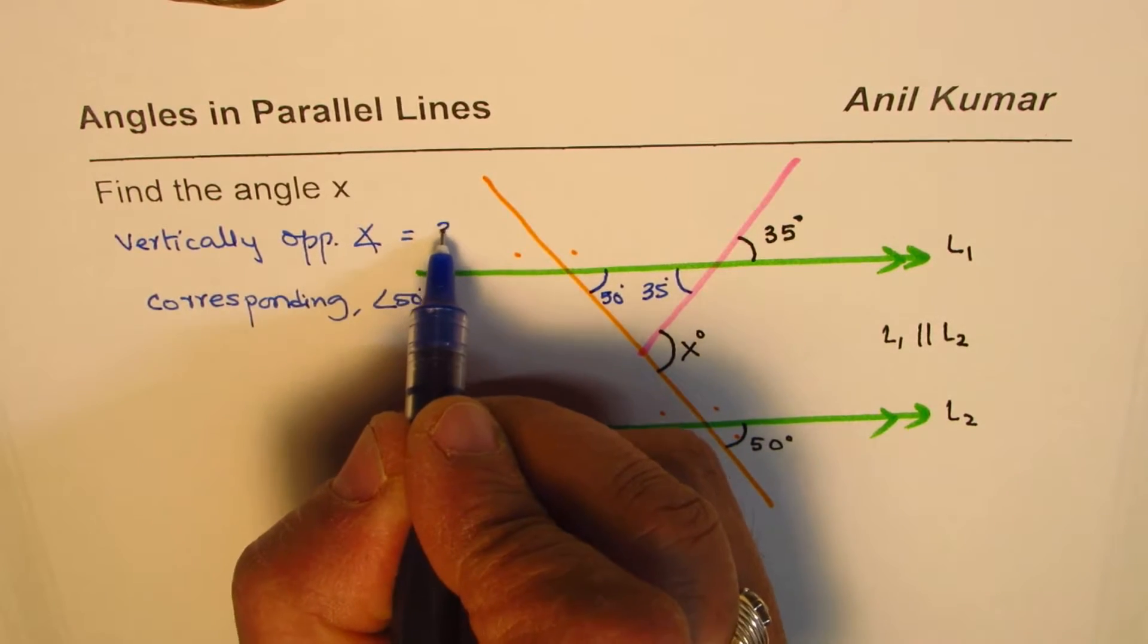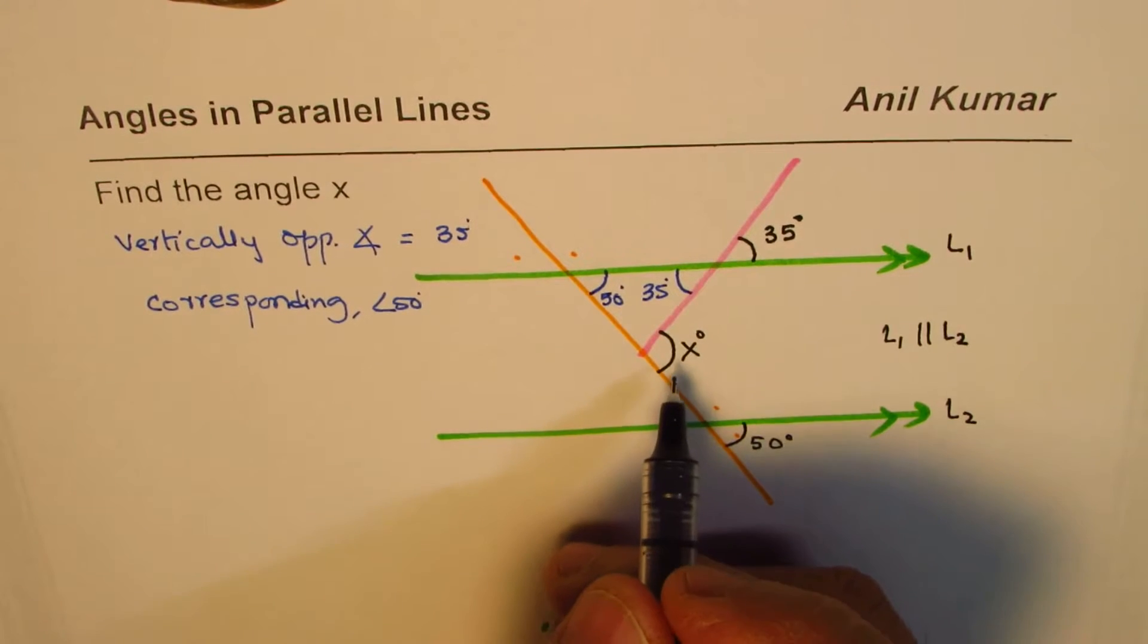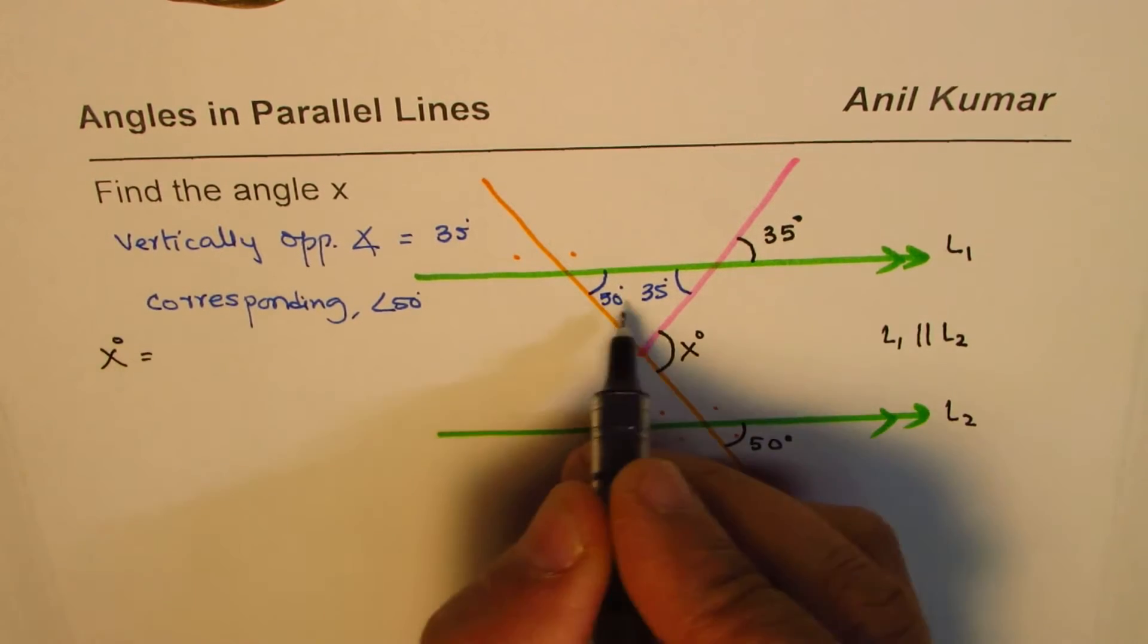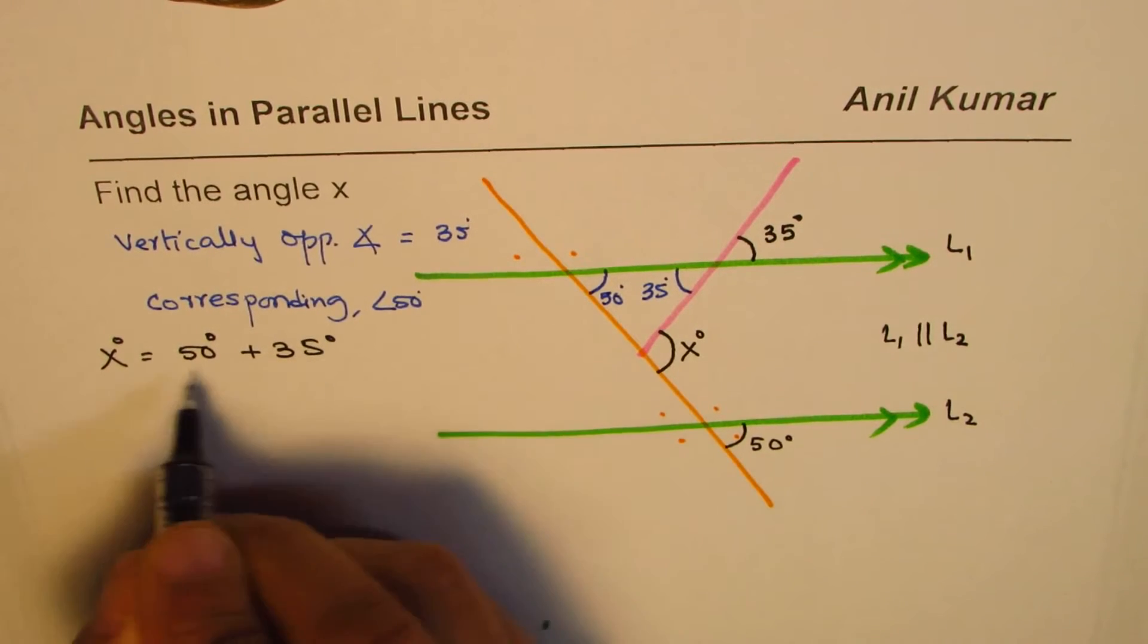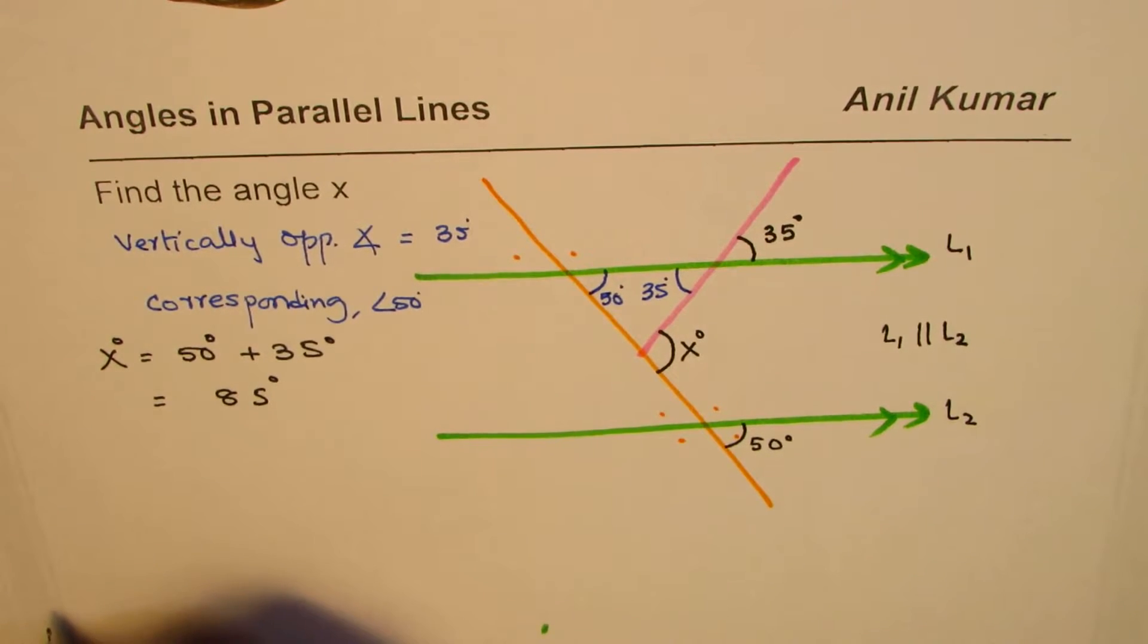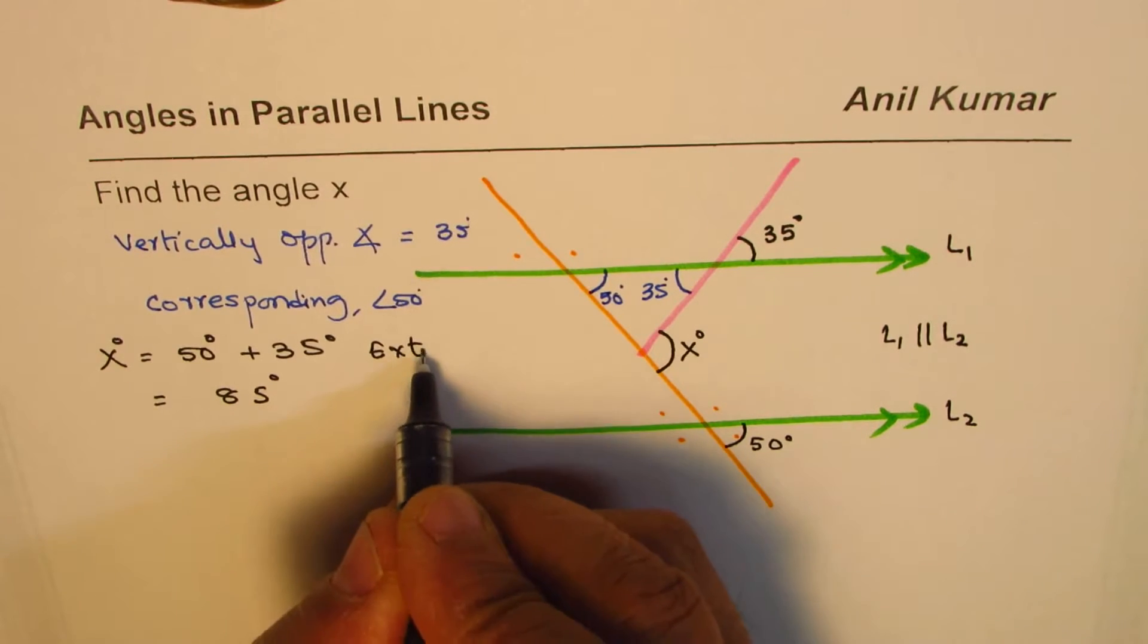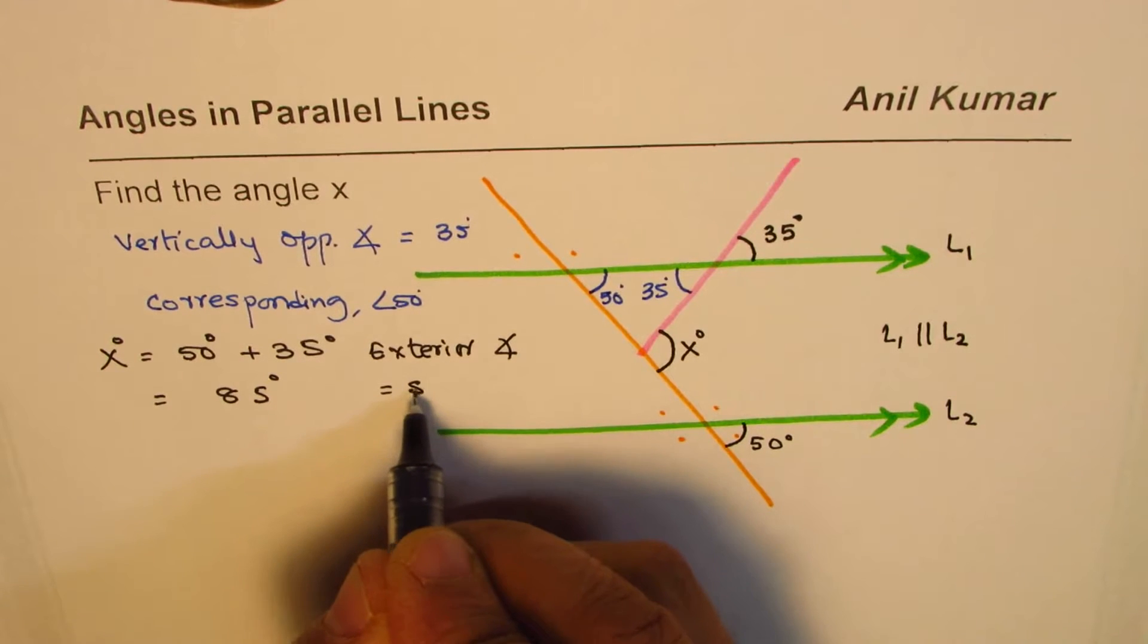So we found that angle 50 degrees and we have vertically opposite angle which is equal to 35 degrees. Now it is easy to find x. You could find x by adding these two. So x degrees equals 50 degrees plus 35 degrees, so that is the sum of these two, that is 85 degrees. This is because of the exterior angle is equal to sum of remote interior.